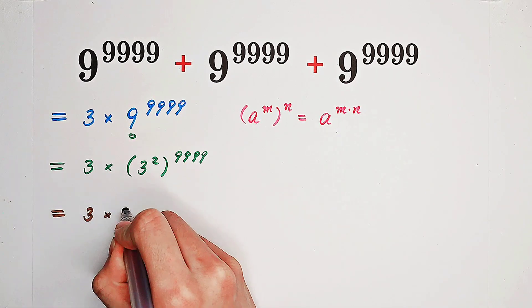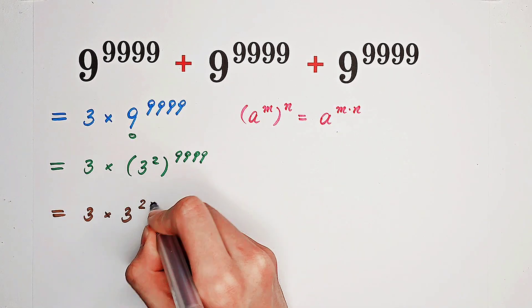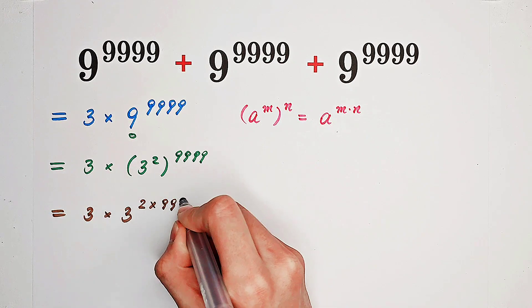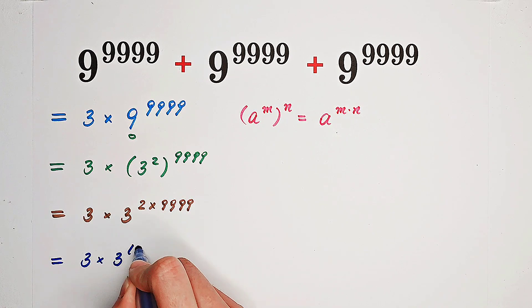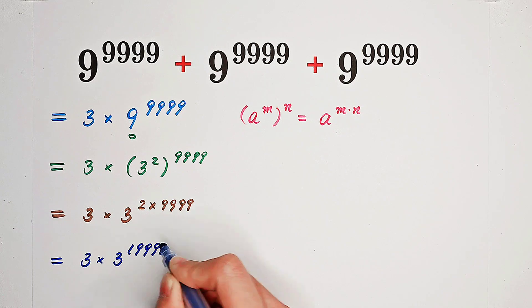So it is equal to 3 times 3 to the power of 2 times 9,999. And 2 times 9,999 is 19,998.